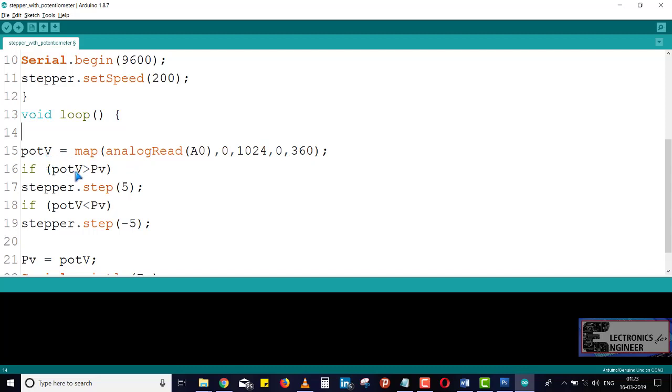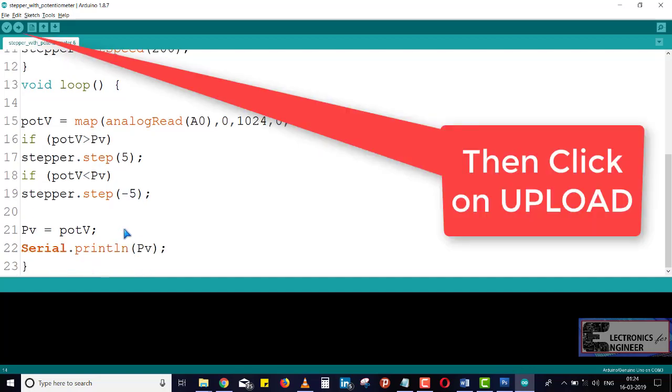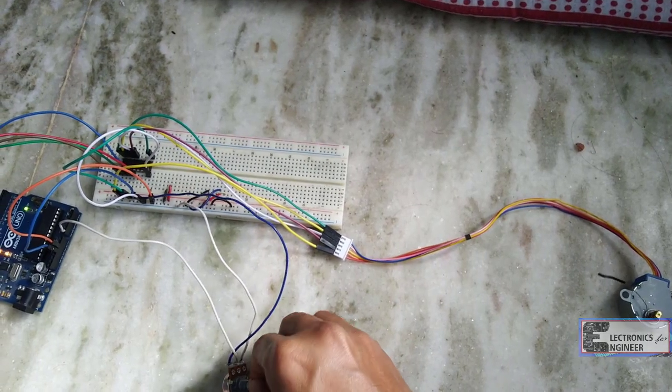It is based upon the previous values. If previous value is high, like if stepper.step 5 is there, then it will come to clockwise. If previous value is low, then it will go to anti-clockwise. Like that, we can control our stepper motor with the potentiometer.